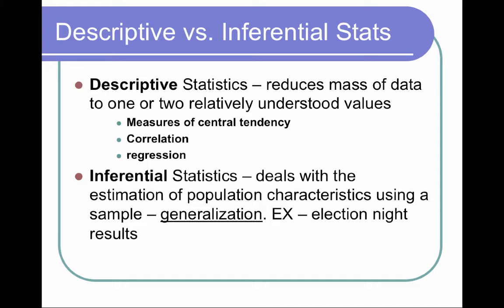The first thing I wanted to talk about is Descriptive versus Inferential Statistics. Descriptive Statistics is a broad term that talks about how we are describing data. It reduces data to one or two relatively easy, understood values. It includes Measures of Central Tendency and some basic statistics like correlation and regression. In contrast, Inferential Statistics deals with generalizations of an entire population. Descriptive is typically when we are talking about a specific research study or a specific group of data, and Inferential is when we are applying that to the population.